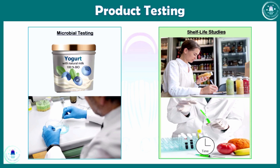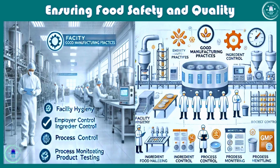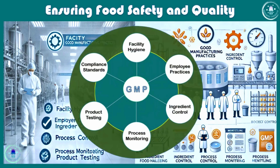In conclusion, GMP ensures food safety, protects consumers, and maintains product quality. The key takeaway is that adhering to GMP in all aspects of food production — including facility hygiene, employee practices, ingredient control, process monitoring, and product testing — minimizes contamination risk and ensures compliance with safety standards.